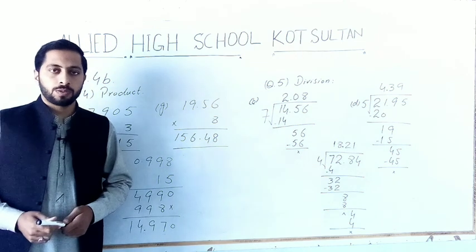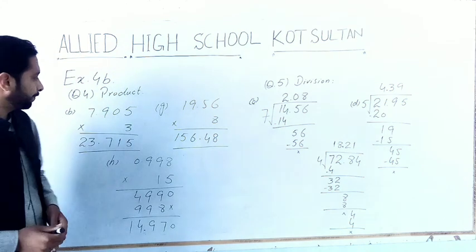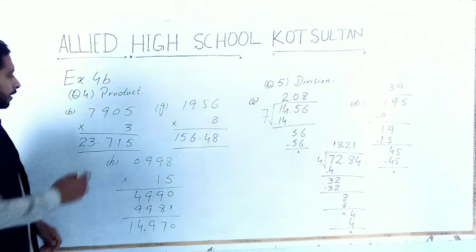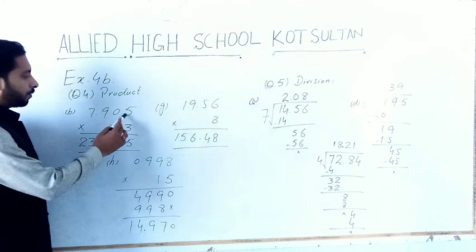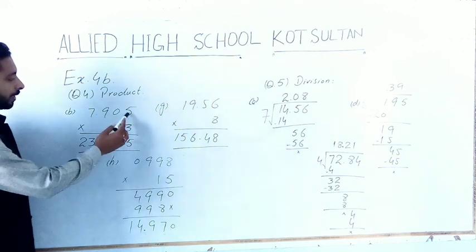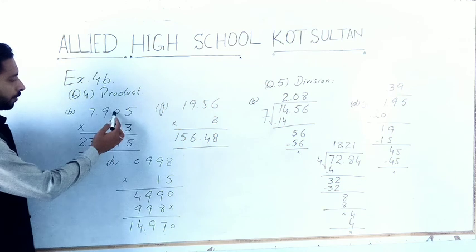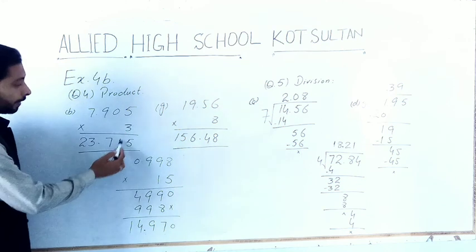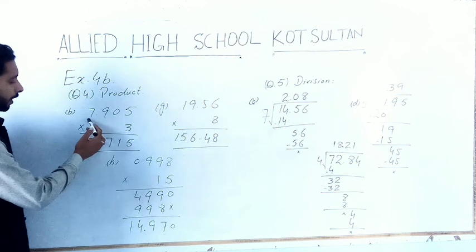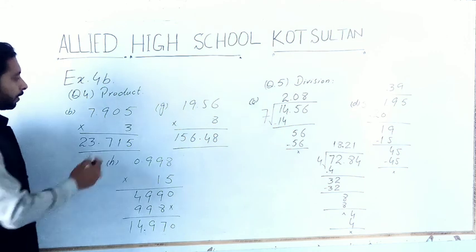Question number four, part B is 7.905 multiplied by 3. We will multiply: 3 × 5 = 15, write 5, carry 1. 3 × 0 = 0 + 1 = 1. 3 × 9 = 27, write 7, carry 2. 3 × 7 = 21 + 2 = 23.